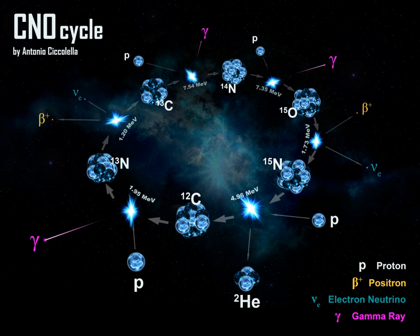Like the carbon, nitrogen, and oxygen involved in the main branch, the fluorine produced in the minor branch is merely an intermediate product and at steady state, does not accumulate in the star.